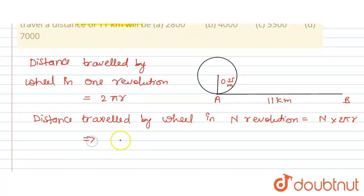So that means N × 2πr will be equal to 11 kilometer, and we know that 1 kilometer equals 1000 meter. So where N is the number of revolutions we need to find, N × 2πr will be equal to 11,000.